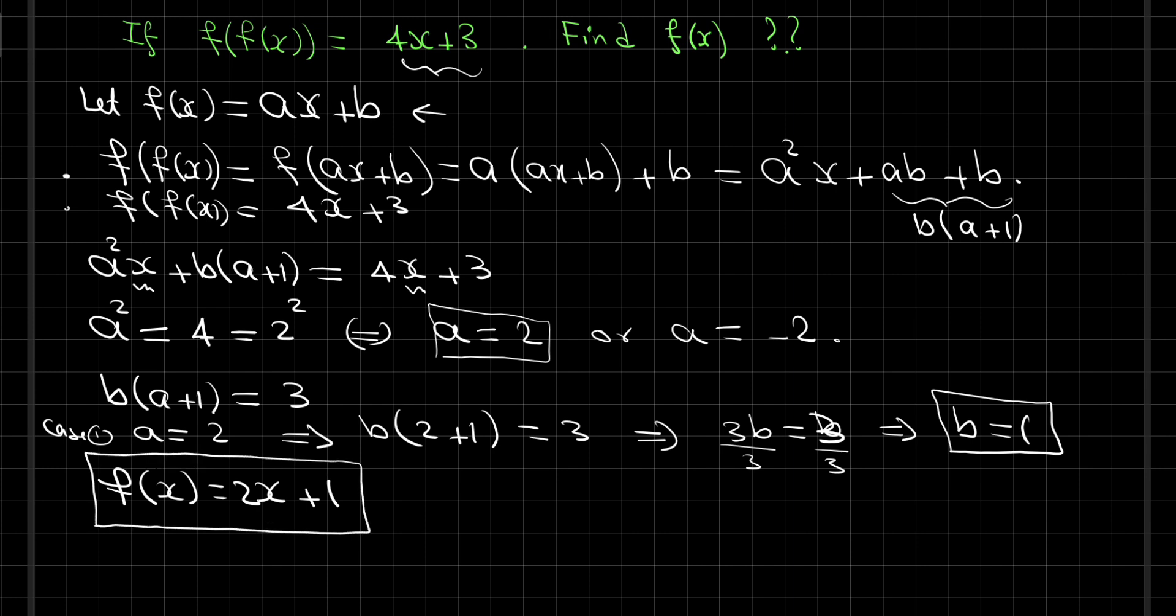Case 2: a equals negative 2. Let's replace negative 2 in this equation, so b multiplied by negative 2 plus 1 equals 3.